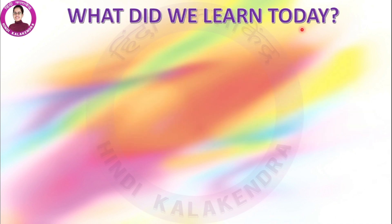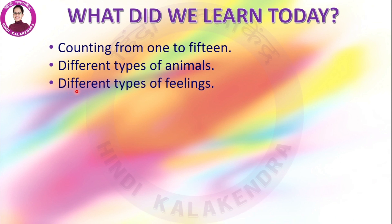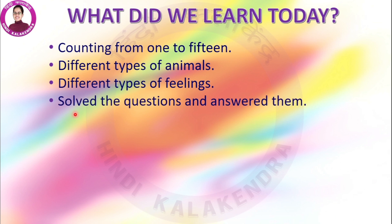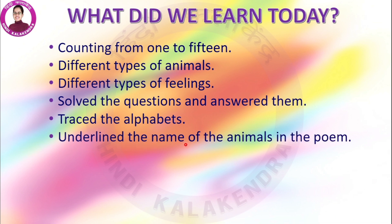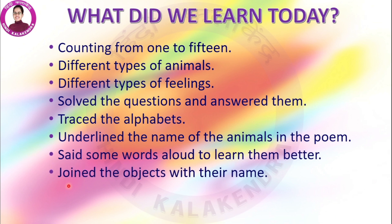So what did we learn today? We learnt counting from 1 to 15. Then we learnt that there are different types of animals. After that we learnt that there are different types of feelings, such as happy, sad, brave and nervous. Then we solved the questions and answered them. After that we traced the alphabets and underlined the names of the animals in the poem. Then we said some words aloud to learn them better, joined the objects with their names, and finally filled in the blanks.